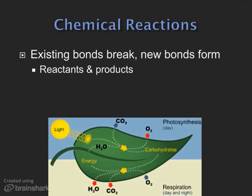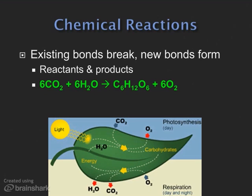In photosynthesis, carbon dioxide and water are the reactants. Glucose and oxygen are the products. This only goes on in the daytime, since light energy is needed to start this reaction. Up at the top in green, you can see the reaction for photosynthesis: carbon dioxide and water going in, and glucose and oxygen coming out. Can you tell that glucose is a carbohydrate with its one-to-one ratio?